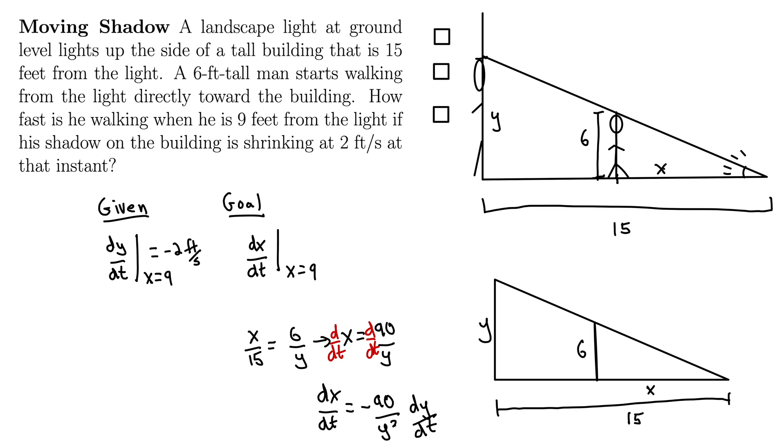Well we have dy/dt, but we actually don't know what Y is just yet. And we want—we're interested in a certain snapshot of time. Right here it says, when he is 9 feet from the light. So when we say he is 9 feet from the light, that is X.